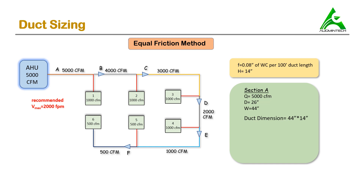The job is not done yet — we need to check the aspect ratio. The aspect ratio is the ratio of duct width to duct height and must lie between 1 and 4 per standards. In our case, 44 divided by 14 gives 3.14, which is less than 4, so this is accepted. Therefore, the final duct size for section A is 44 inches by 14 inches.